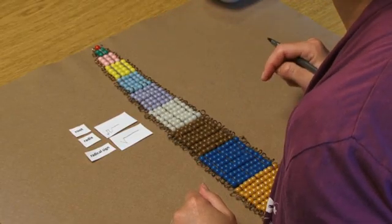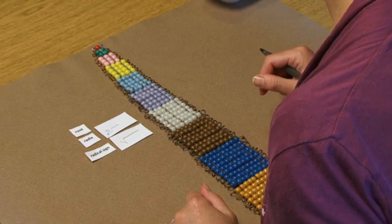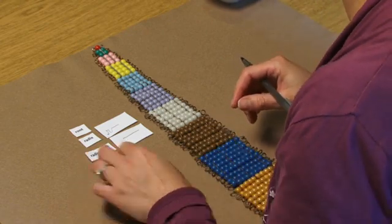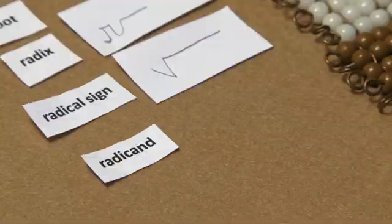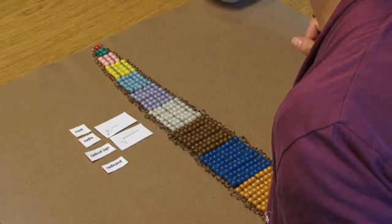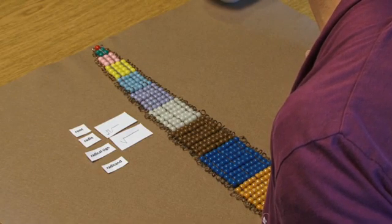As we look back at our squares, we can talk to the students about another word, the radicand. The radicand is what's going to be under the line in our radical sign. It's also going to be the number of beads that are in each square as we're using our squares.